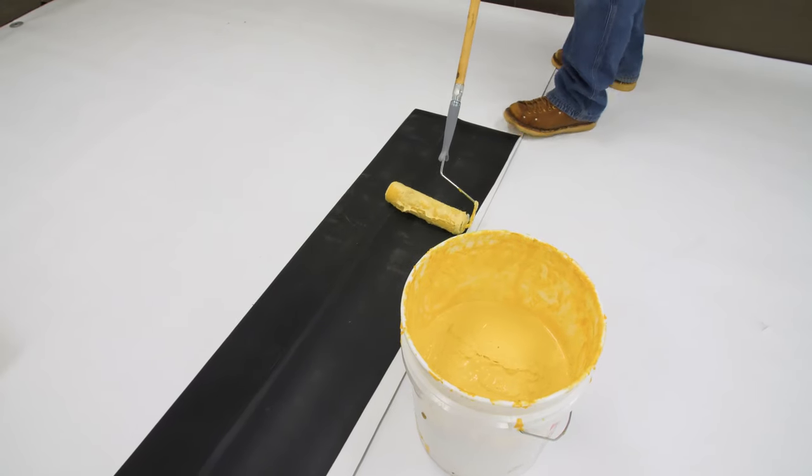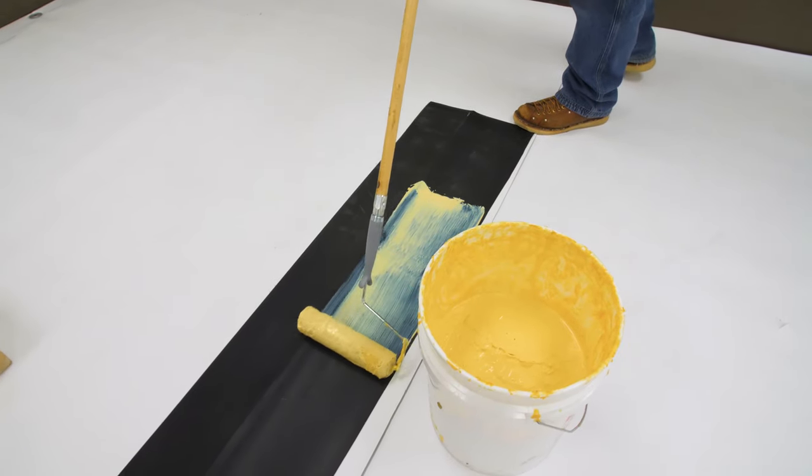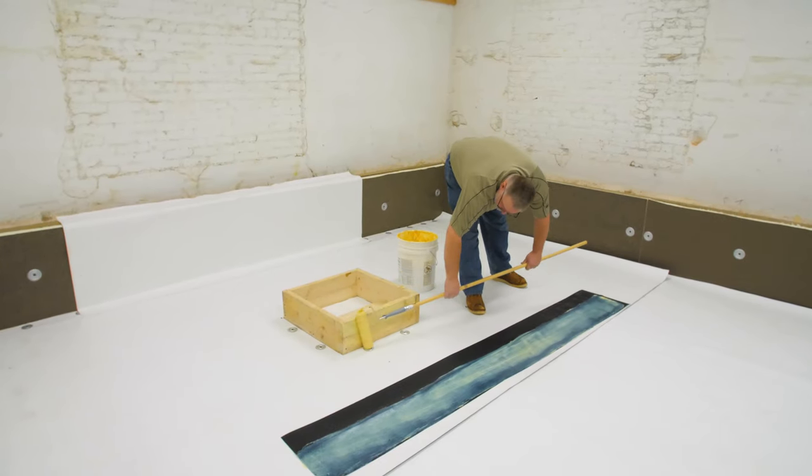Apply an approved adhesive to both the curb and back of the membrane. Do not apply adhesive in any seam areas.